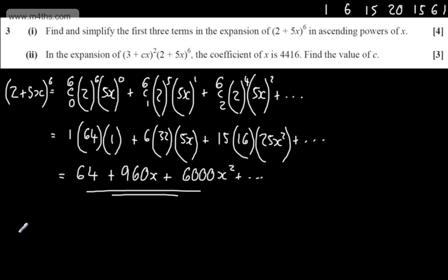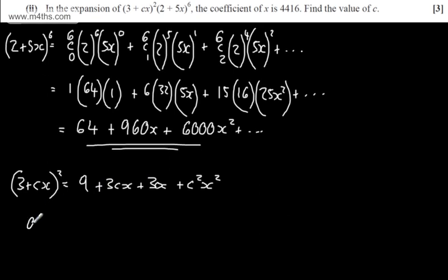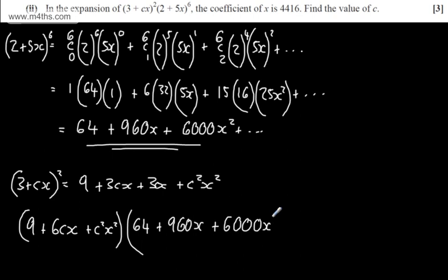Let's first look at the expansion here. So what we can say is (3 + Cx)² is going to give us now 9 plus 3Cx plus another 3Cx, and then we're going to have plus, we need to be careful here, plus C²x². Therefore, what I'm going to have now is 9 + 6Cx, and then we're going to have plus C²x², multiplied by the 64 + 960x + 6,000x², and so on and so forth.